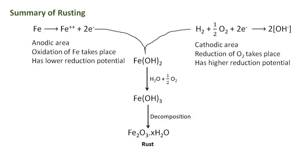This is a summary of rusting. Oxidation occurs at the anodes of each electrochemical cell. Therefore, at each anode, neutral iron atoms are oxidized to ferrous ions. Thus, the metal atoms in the lattice pass into the solution as ions, leaving electrons on the metal itself.